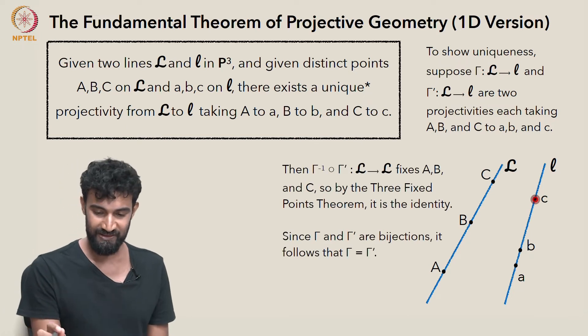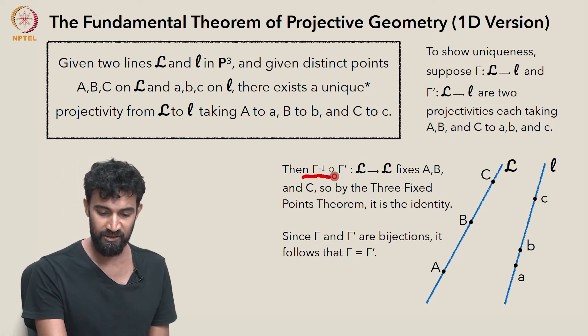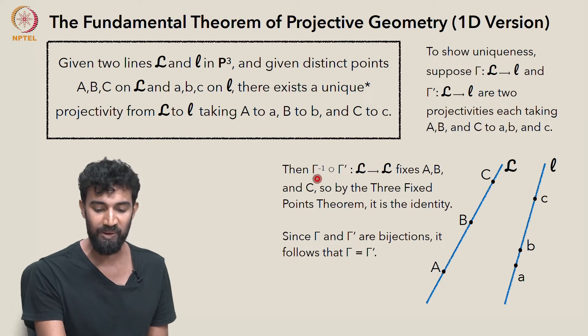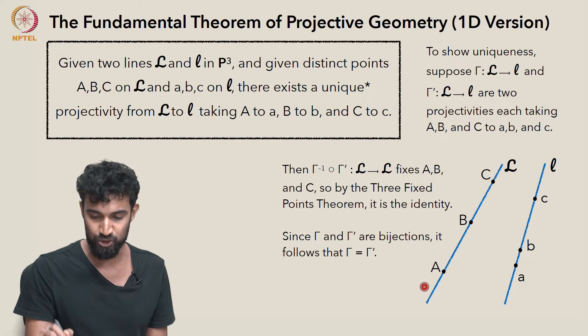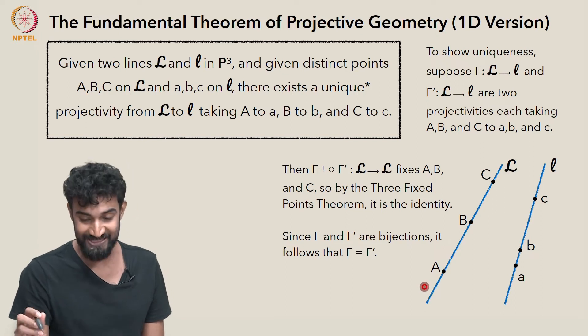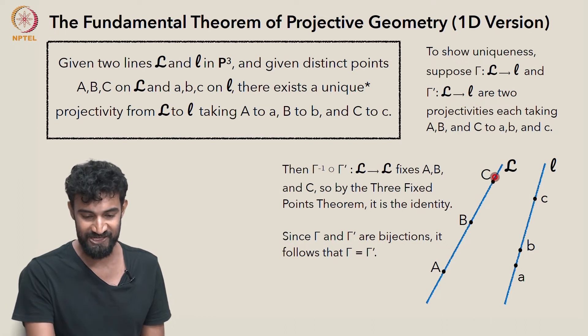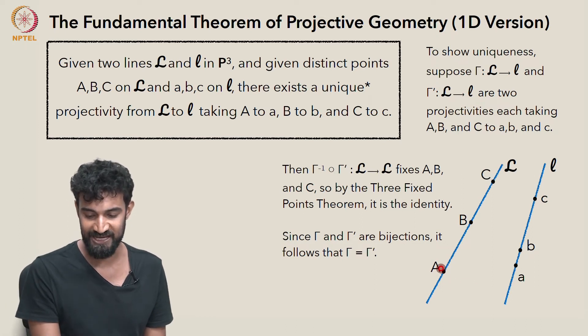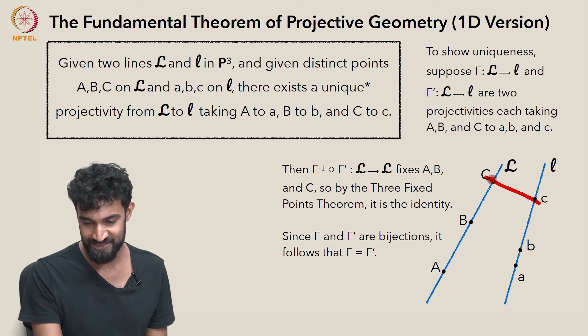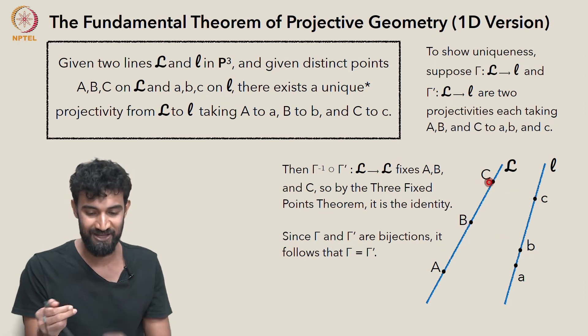Then gamma prime followed by gamma inverse is a map from L to itself. And it's going to fix capital A, capital B, and capital C, because gamma prime is going to send capital A to little a, and gamma inverse is then going to take little a back to capital A. And the same thing for B and C. They're each going to get sent back to themselves.